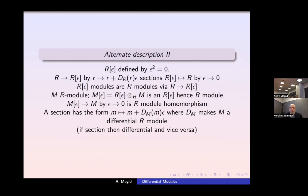R[ε] is an R-algebra, meaning R[ε]-modules are R-modules via the map R → R[ε]. If M is an R-module, M[ε] means R[ε] ⊗_R M. This maps to M by ε ↦ 0 as an R-module homomorphism. If I have a section of the form m ↦ m + d(m)·ε — where d(m) makes M a differential R-module — then in brief, a section of M[ε] → M as R-modules gives M a differential R-module structure, and vice versa.